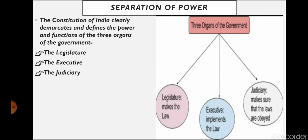The Constitution clearly demarcates and defines the power and functions of the three organs of government. The legislature — Lok Sabha and Rajya Sabha at the central level, and legislative assembly and legislative council at the state level — is responsible for making laws. The executive — the Prime Minister and council of ministers at central level, and the Chief Minister and council at state level — implements those laws. The judiciary ensures laws are obeyed and provides justice. All three are separated and check upon each other.